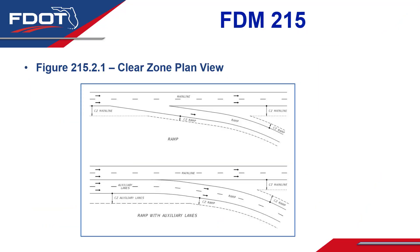First up, details were added under Figure 215.2.1 for the Clear Zone Plan View. As part of the TDH migration, the Turnpike Enterprise had requested some additional detail to show exactly how the Clear Zone limits are measured at ramps and ramps with auxiliary lanes. The Clear Zone for the mainline follows along parallel to the centerline of the mainline roadway, until it encounters the Clear Zone of the ramp, which is following along parallel to the centerline of the ramp.